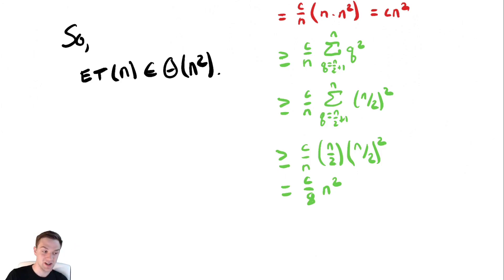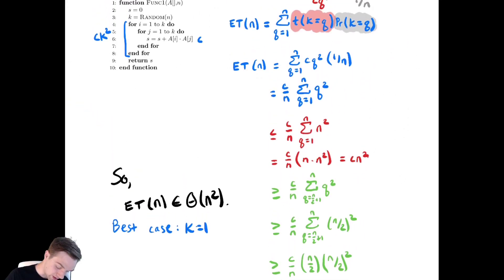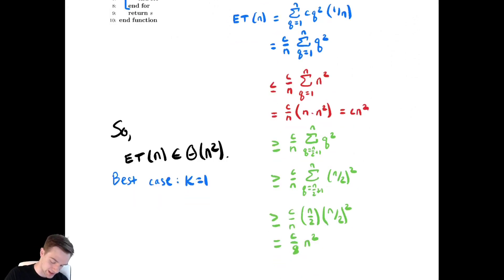A natural question might be, how does this compare to the best case and the worst case? Let's analyze those. The best case is when k is equal to 1. Let's scroll up to the code. If k is equal to 1, those loops both execute once and once. So it would be constant run time. So that's theta of 1.